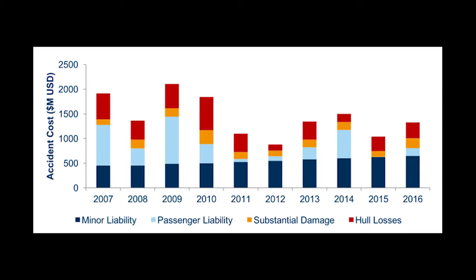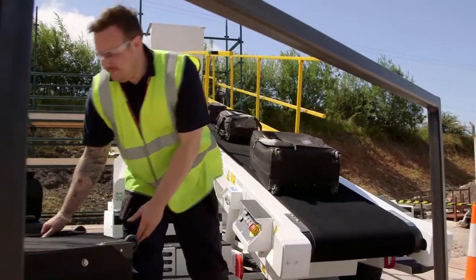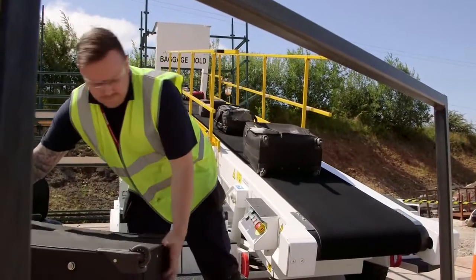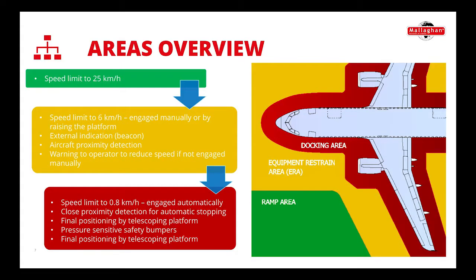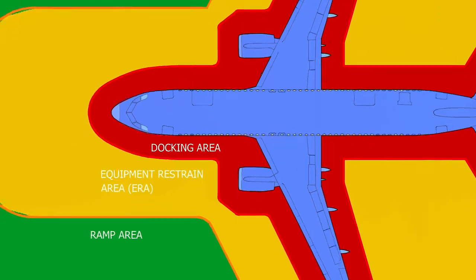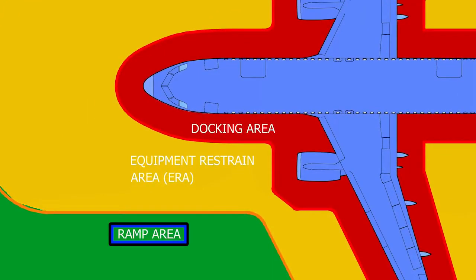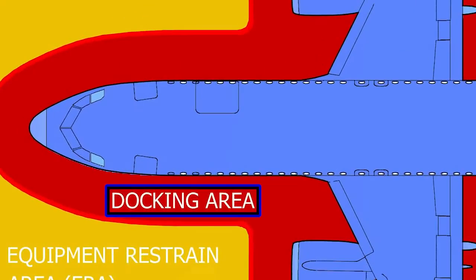All ground support equipment manufactured after 1 July 2018 shall comply with this standard. There are three main zones in relation to an aircraft covered by the standard: ramp area, equipment restrain area, and docking area.